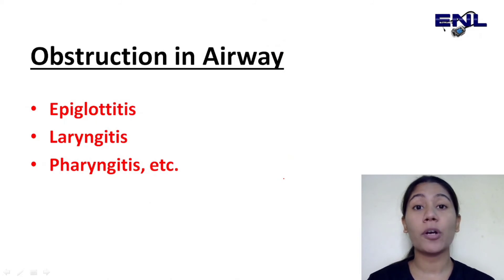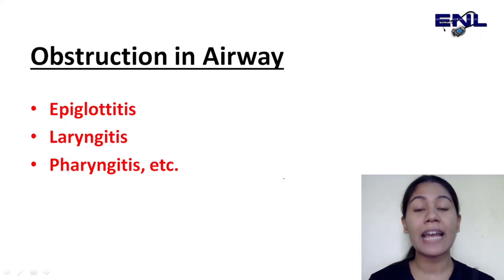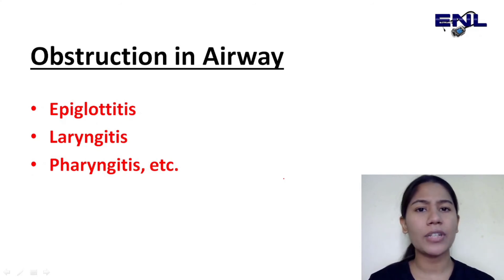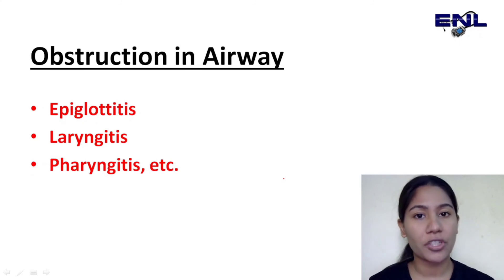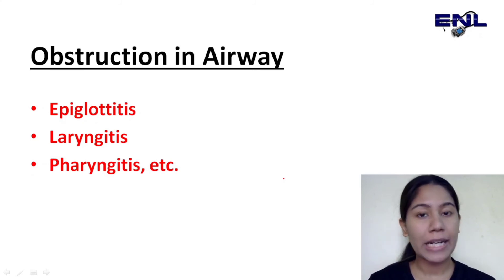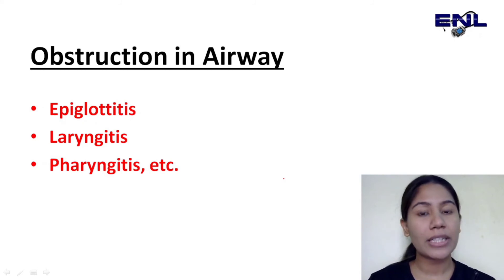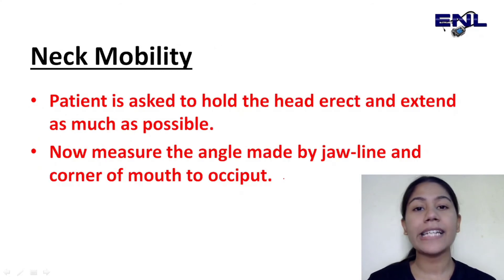Next is O — Obstruction in the airway. We check whether there is already any obstruction — any foreign particle, any inflammation such as epiglottitis, laryngitis, or pharyngitis. We check for any such difficulty or blockage. So that covers the O in LEMON — obstruction in airway. So far we have covered L (look externally), E (evaluate 3-3-2 rule), M (Mallampati score), and O (any obstruction).